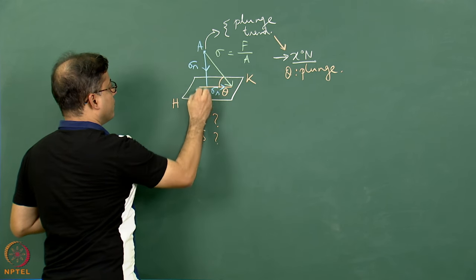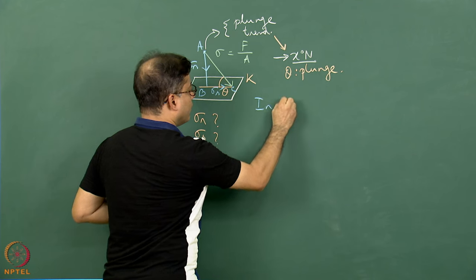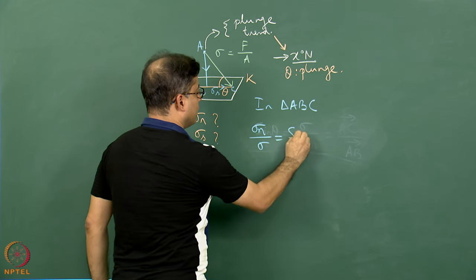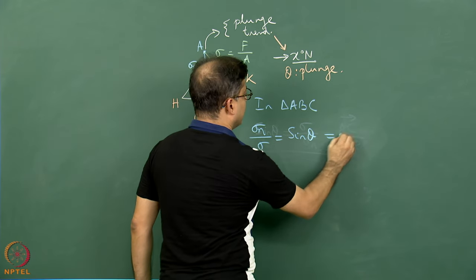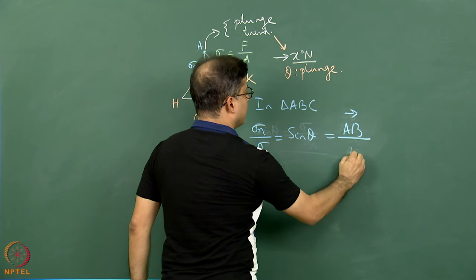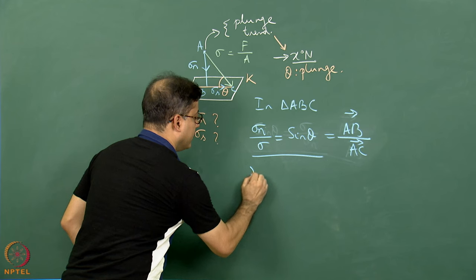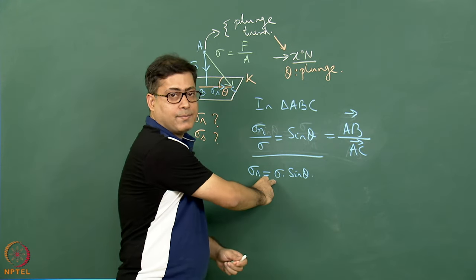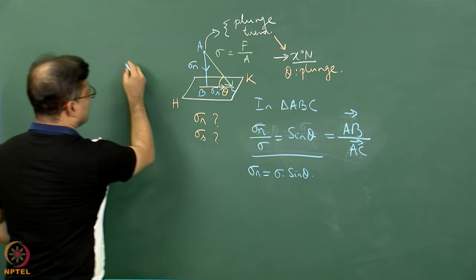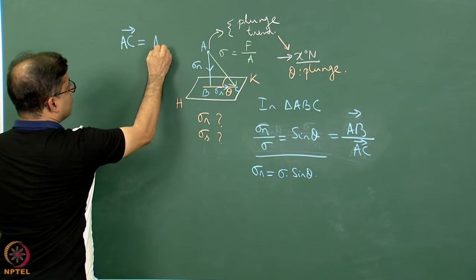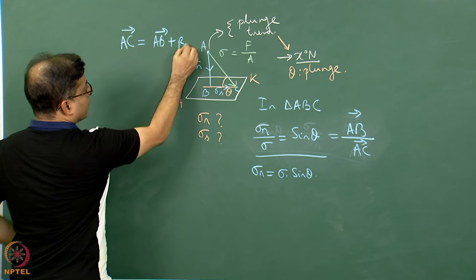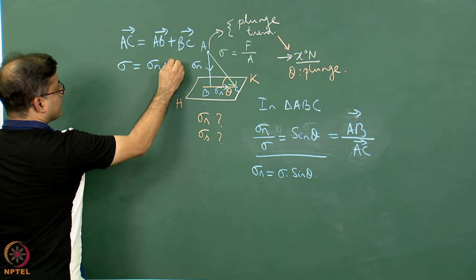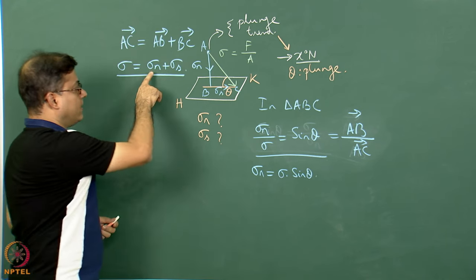Now, in triangle ABC, sigma_n divided by sigma is equal to sin(theta), and we can write this as AB divided by AC. From here we can say that sigma_n equals sigma multiplied by sin(theta). If we write by way of vector addition, then AC equals AB plus BC, or in terms of symbols, sigma equals sigma_n plus sigma_s. These are vectors and the addition is a vector addition.